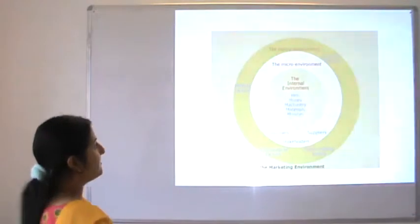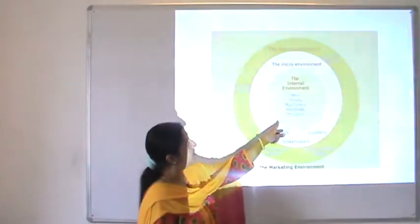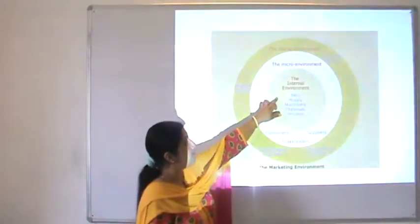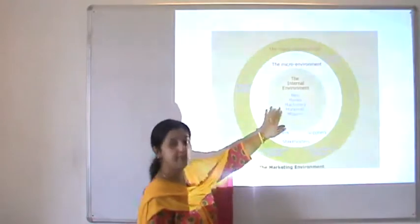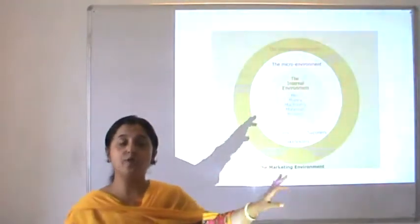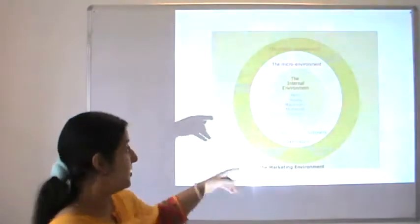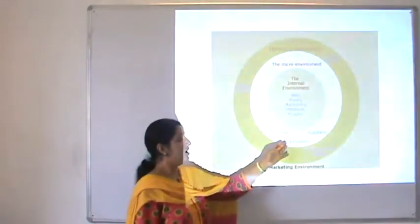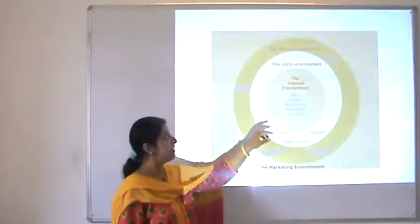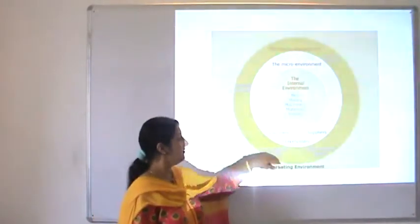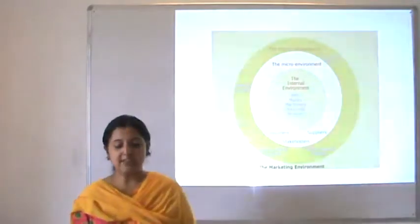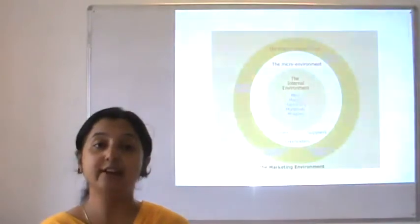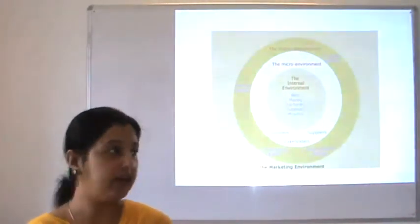This slide helps us understand that the internal environment — or task environment — of the organization is constituted of five traditional M's: men, money, machinery, material and merits — the five foundation stones of any organization's structure. The outer circle comprises the macro environment, where your consumers, stakeholders, suppliers and distributors exist. The broad macro environmental factors comprise political, economical, socio-cultural, technological, legal and environmental factors.